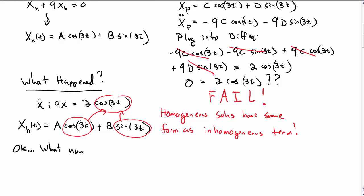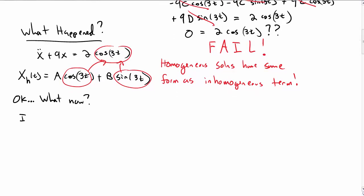So what now? We need to try a different strategy. Instead of the guess for the particular solution of something that looks like cosine of 3t, now we need to use the particular solution, something that looks like ct cosine of 3t plus dt sine of 3t.